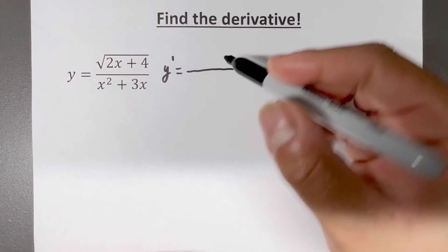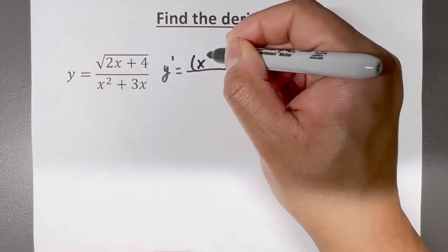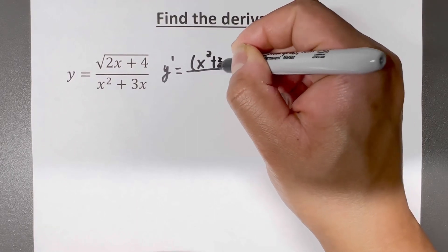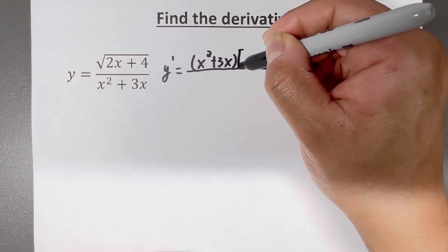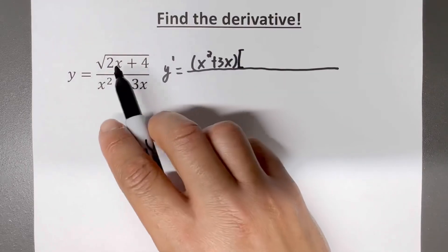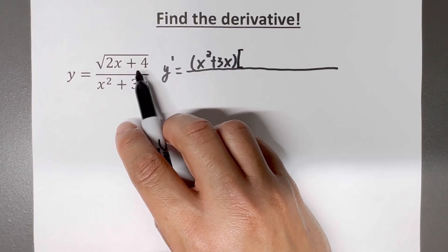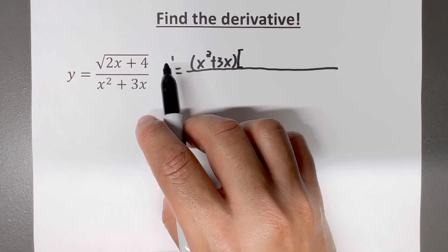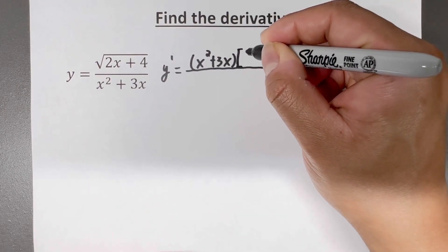The quotient rule says take the bottom one as it is. So the bottom one as it is, is just x squared plus 3x, times the derivative of the top. The square root of 2x plus 4 is 2x plus 4 raised to the one half.